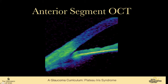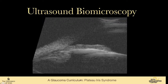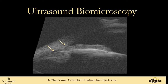Anterior segment OCT — you can see the slit here, a deep chamber that just drops off in this slit in the periphery. And this is someone I just saw last week who has plateau iris on ultrasound biomicroscopy. You just see this big forward ciliary body and just a little sliver of open angle overlying that trabecular meshwork. There's the ciliary body; there's that sliver.